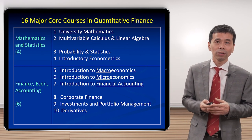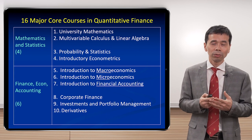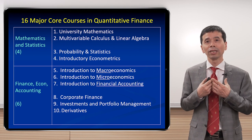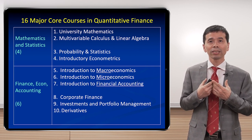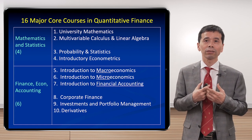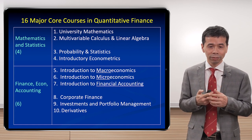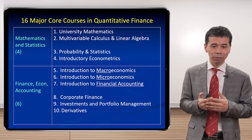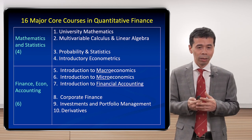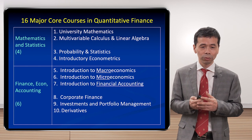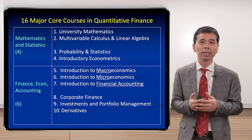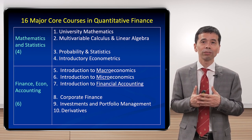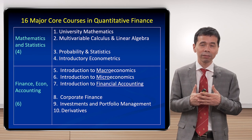Let me give you a quick review of what courses you'll be studying. At Hong Kong U, to get a quantitative finance degree you need to take 40 courses, among which 16 are quantitative finance major courses. There are four courses covering mathematics and statistics, and six courses covering basic background in finance, economics, and accounting — so essentially all 10 courses that any finance major would have to take.